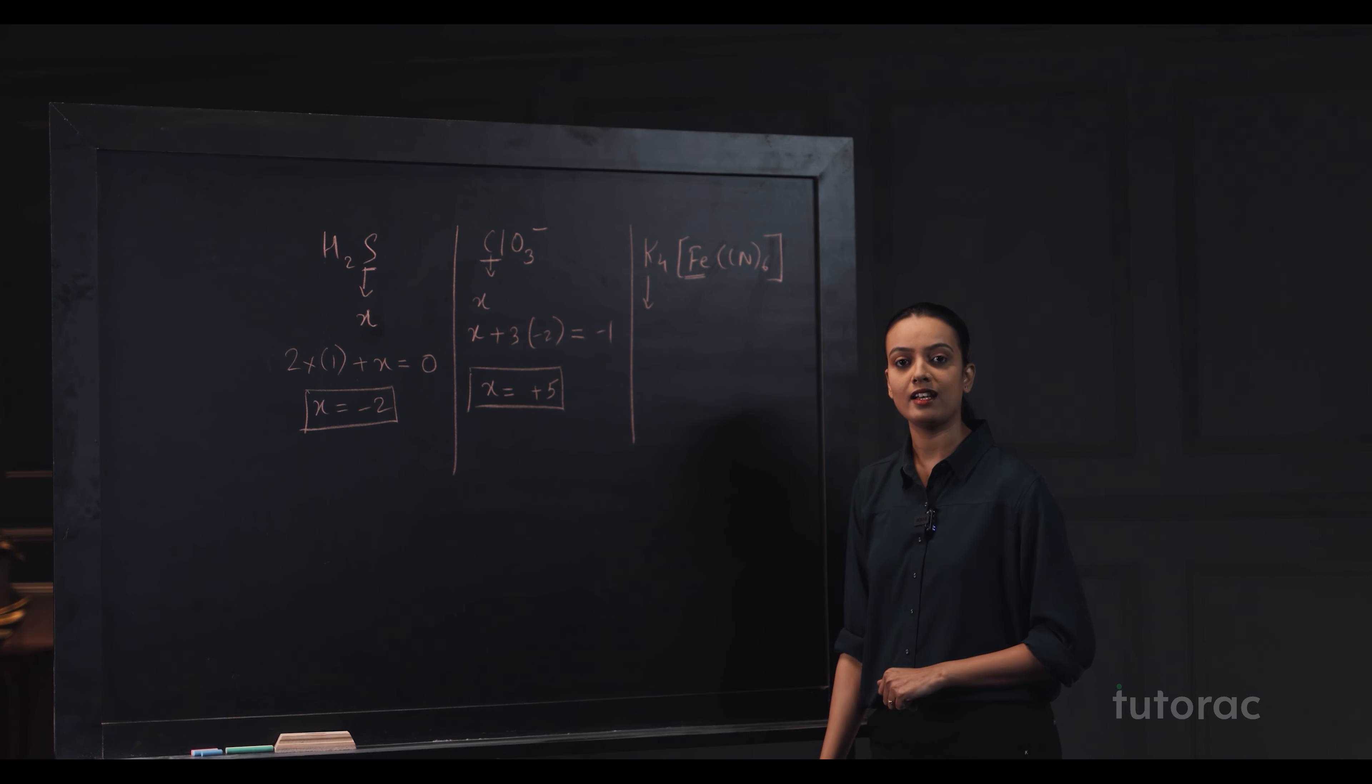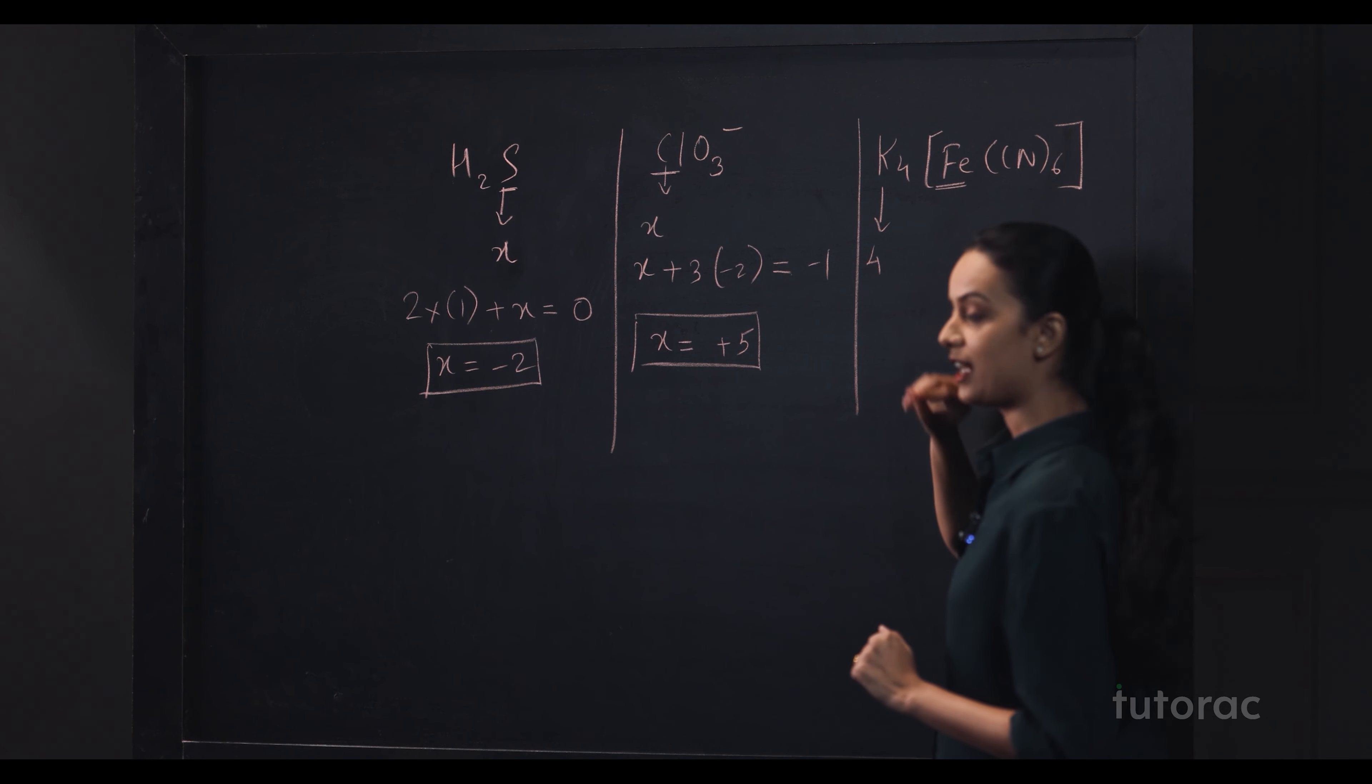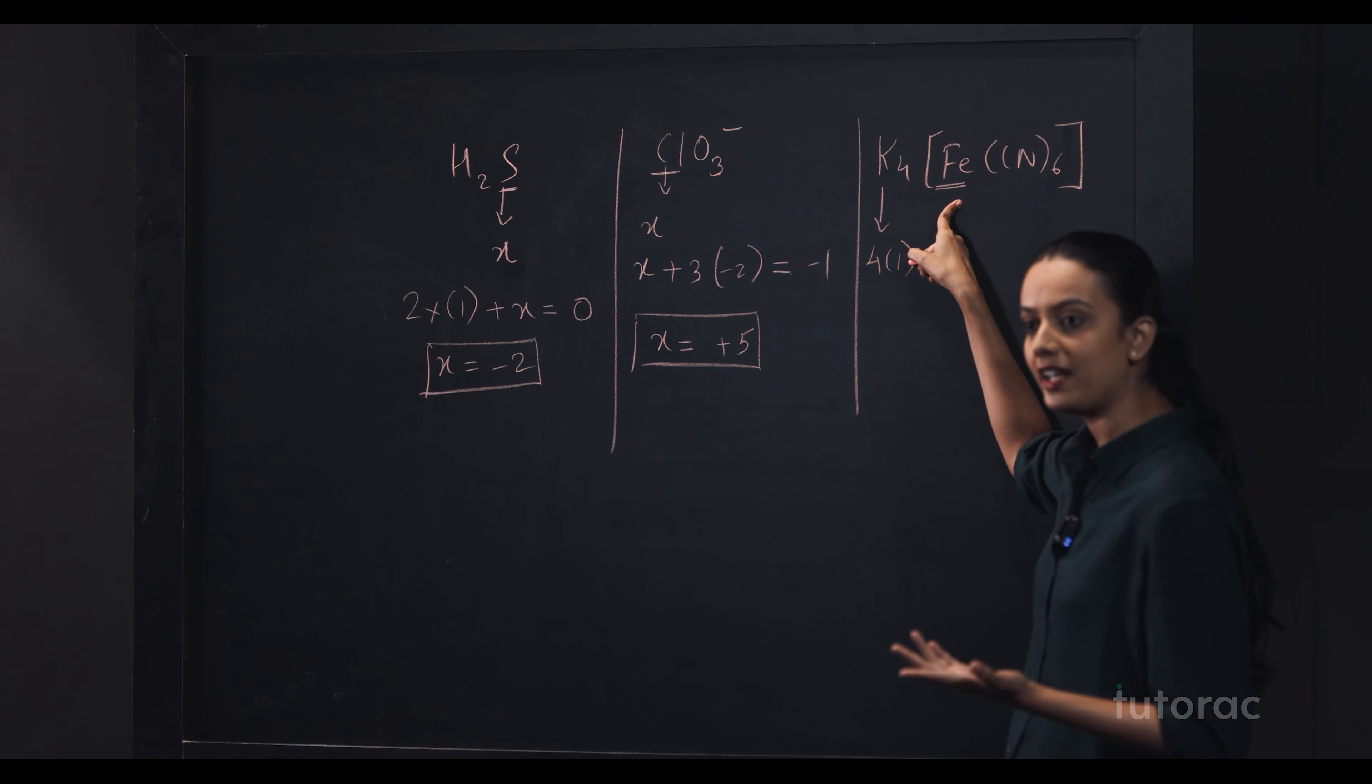it is written K4Fe(CN)6 and here you have to calculate oxidation number of iron. Now, see, potassium being an alkali metal, it has oxidation number 1. 4 potassium are there.